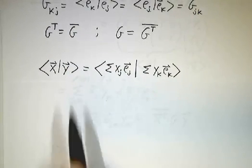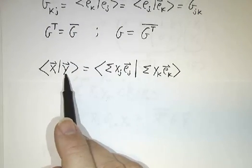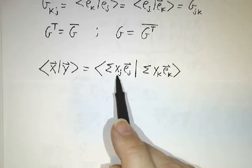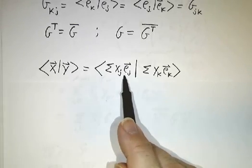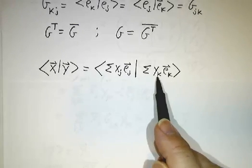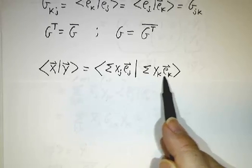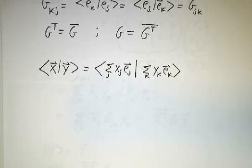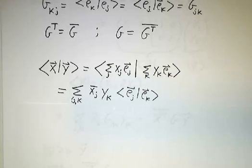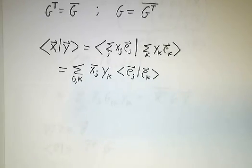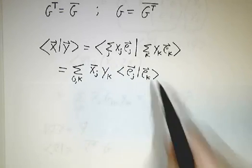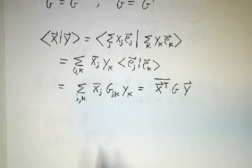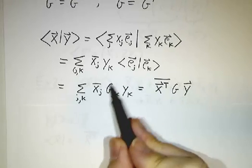Now, this allows us to figure out the inner product of x with y. See, x is x1 e1 plus x2 e2 plus x3 e3, and so on, and y is y1 e1 plus y2 e2 plus y3 e3. So this is the sum over j, and this is the sum over k. And you just expand it out. When you get the inner product of e_j with e_k, you say, oh yeah, that's just G_jk.